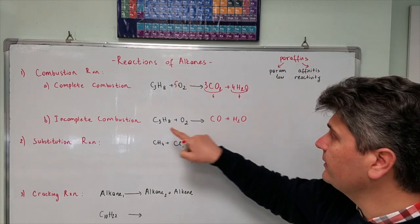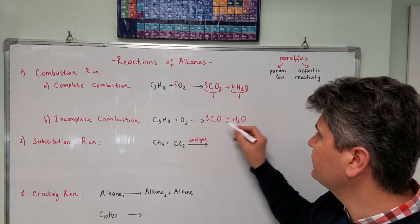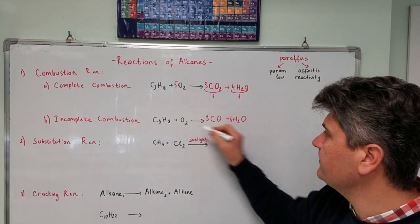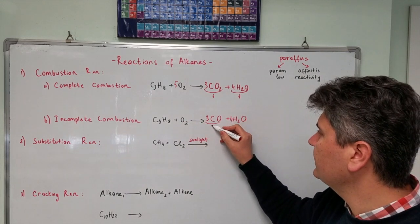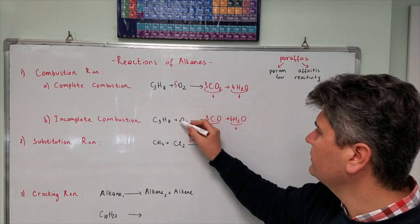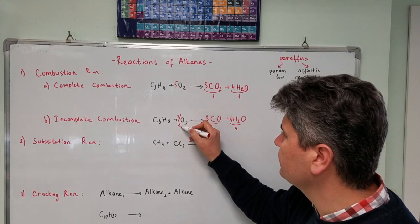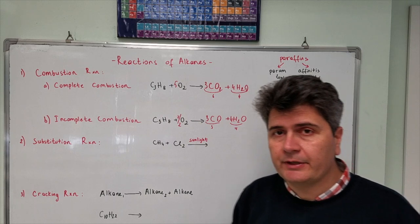Let's balance it again. Three carbons, so I write here three. Eight hydrogens, so I write here four. Four times two is eight again. Then oxygens, I have three oxygens in here, four oxygens in here. So in total it is seven, so I write here seven over two. Second reaction is substitution reaction.